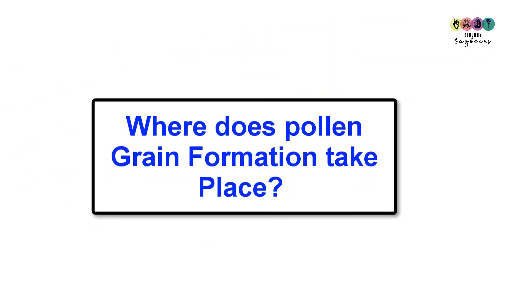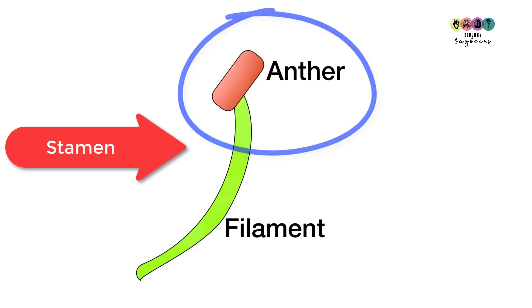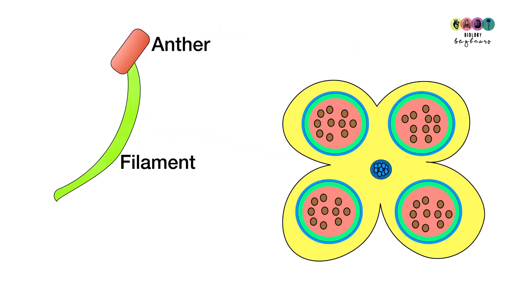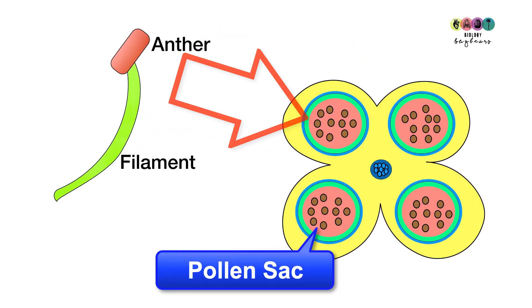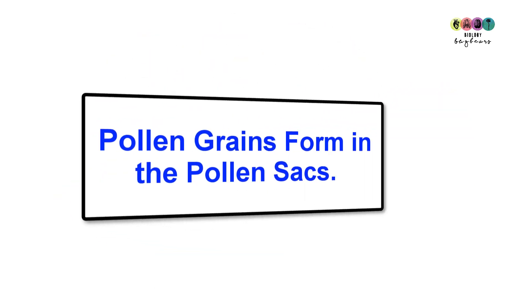Where does pollen grain formation take place? It takes place in the anther of the stamen, specifically in the four chambers known as pollen sacks found within the anther.